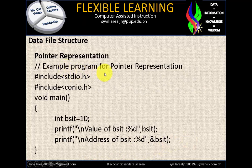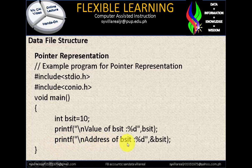Pointer representation example program: #include stdio.h, #include conio.h, void main. Integer bsit = 10 — the variable name is bsit, the value is 10. We print the value of bsit using percent d for integer. Then we print the address of bsit — the value 10 has its address in memory allocation, but we don't know what the address is because it depends on the loading of the personal computer.